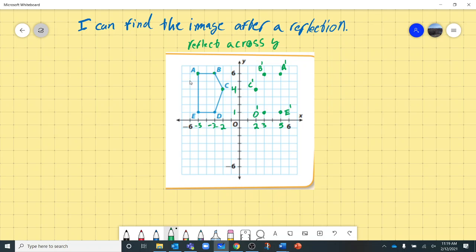And so if you've noticed, our X values are just the negative of the original, of the pre-image. But our Y values stay the same. And then our X values are just the exact opposite. So if it was negative 3, it became positive 3, et cetera. Negative 2 became positive 2.